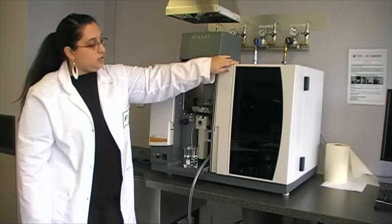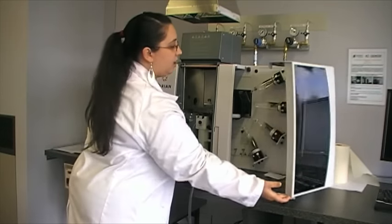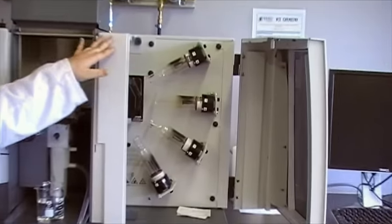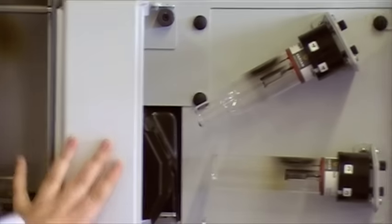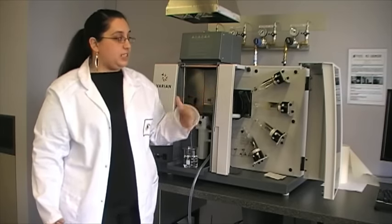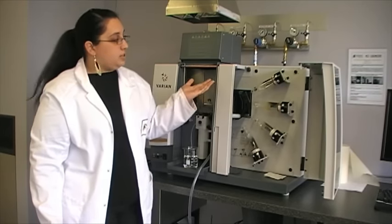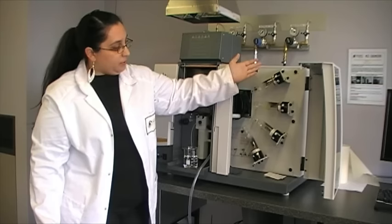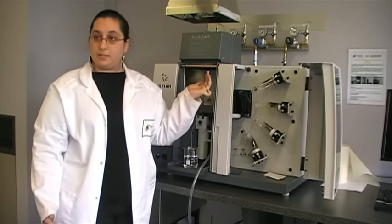Over here in this section of the instrument, we have a range of hollow cathode lamps. Now in your textbooks, you might have seen some instruments and they just have one hollow cathode lamp. The lamp is specific for different elements. So for instance, this top lamp we use for calcium, magnesium or aluminium metals.